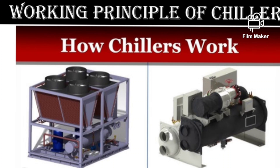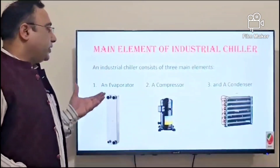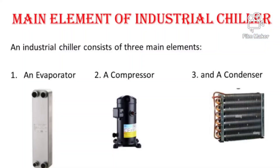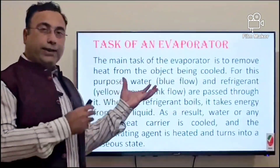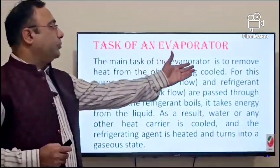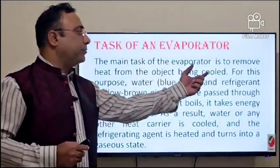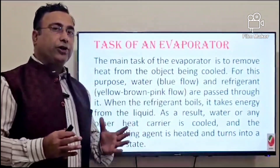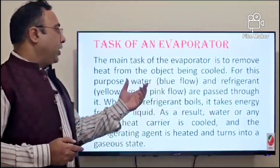For any industrial chiller, there are three main components. The first one is the evaporator, the second one is the compressor, and the third one is the condenser. First, the evaporator — the main task of the evaporator is to remove heat from the object being cooled. So the evaporator's job is to make the object cool.